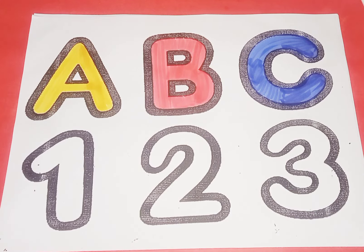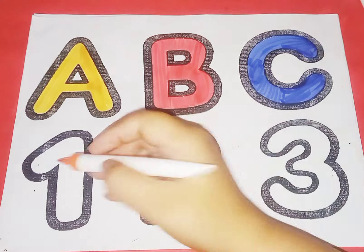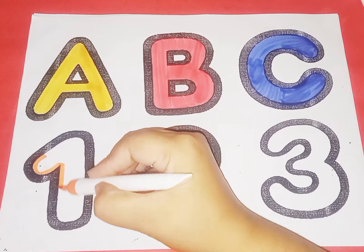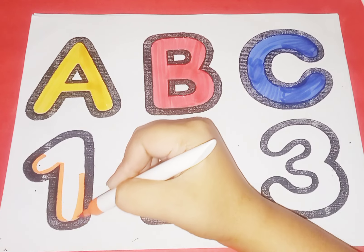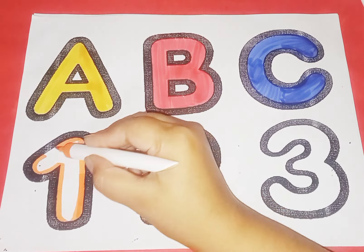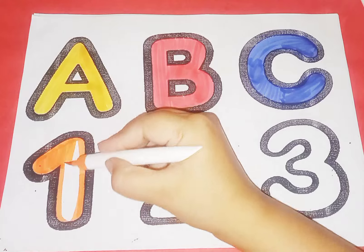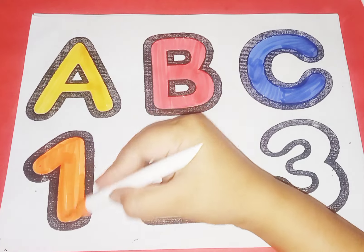Now we learn some number and their spelling. Orange color, number 1. O, N, E, 1.